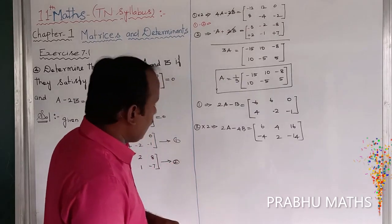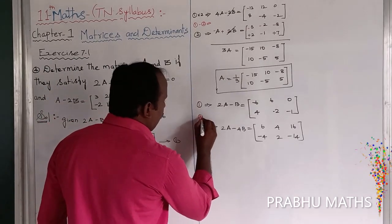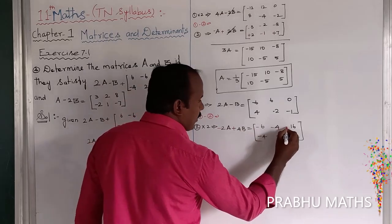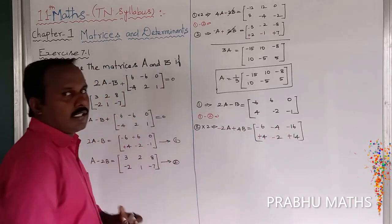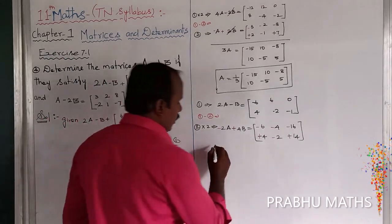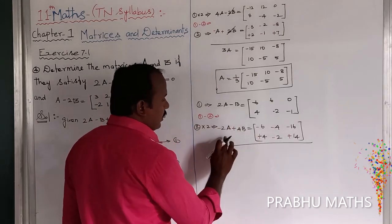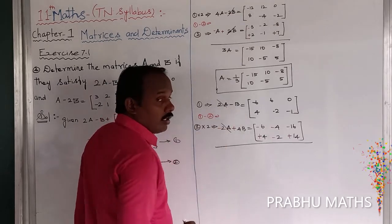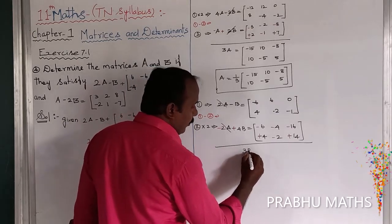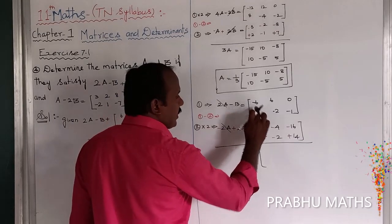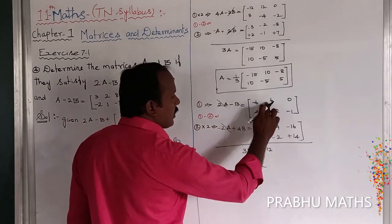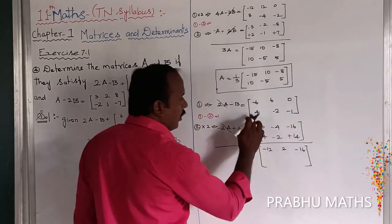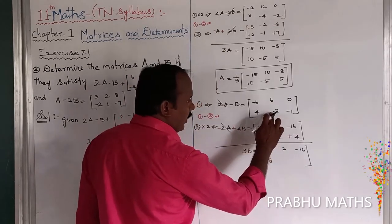Equation 1 minus equation 2. Equation number 2 fully multiplied; the 2A terms cancel. So 1 times B minus 4 times B gives 3 times B equal to: minus 6, minus 6, minus 12, 6 minus 4 plus 2, 0 minus 16 equal to minus 16, 4 plus 4 equal to 8, next minus 4 minus 2 equal to minus 4.